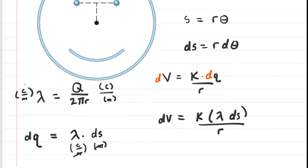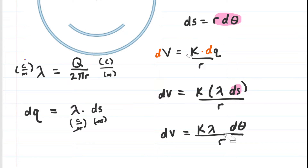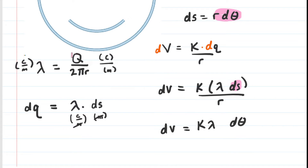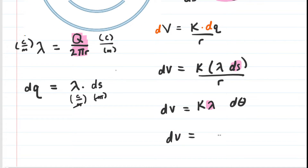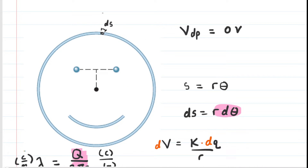We replace dQ with lambda times dS, giving dV = k·lambda·dS / R. We already know that dS = R·dθ, so we substitute that in. Interestingly, the R in the numerator and the R in the denominator cancel out. Then, substituting lambda = Q/(2πR), our expression becomes dV = k · Q/(2πR) · dθ. This is the electric potential produced by that one tiny arc of charge. But we want the potential produced by all the tiny arcs added together.